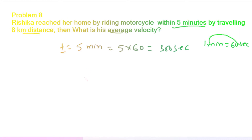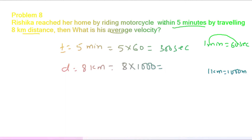The distance is given as eight kilometers. Since the unit of distance is meters, we have to convert it. We multiply by 1000 because in one kilometer there are 1000 meters. So the total distance becomes 8000 meters.